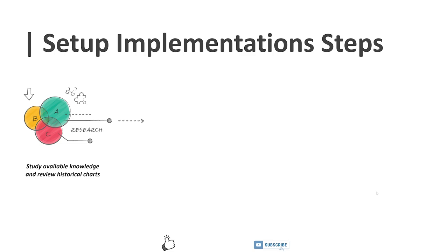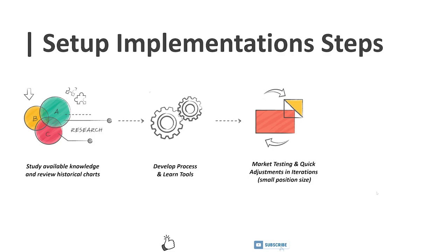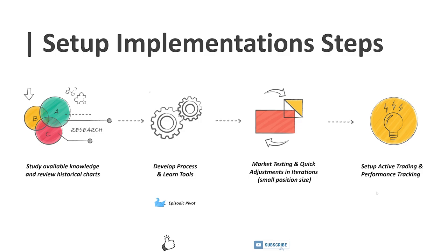Here's where I am in terms of setup implementation. There are a couple of steps I highlighted for myself: study available knowledge and review historical charts, then develop process and learn tools, then market testing and quick adjustments with small position size, and finally set up active trading and performance tracking. As of now, both the Episodic Pivot and Breakouts were in the research phase. Now Episodic Pivot is studied well enough to move to the next stage — developing process and learning tools. The Breakout setup is still in research phase, and I will still have to study the intraday charts for the Breakouts. That's the next video coming soon.